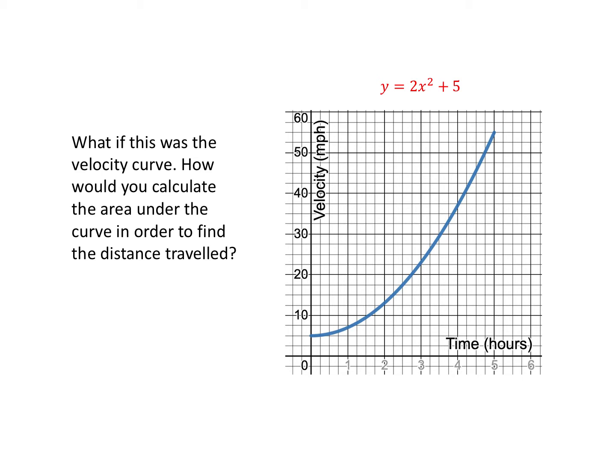You can see here velocity on the vertical axis and time on the horizontal axis. We've tried different things like rectangles where we've used the left, the middle, and the right portion of the rectangle to approximate the area.